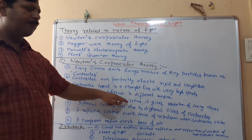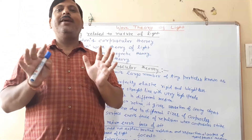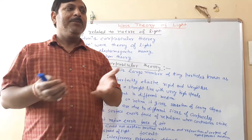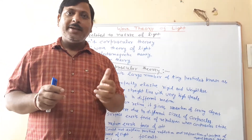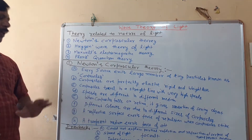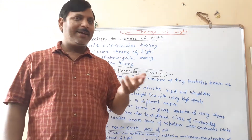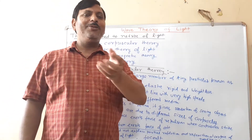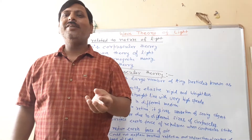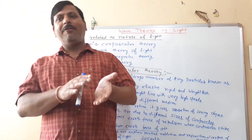The third point is that when the corpuscles fall on the retina, we get a sensation of seeing an object. Newton also explained different colors: different colors correspond to different sizes of particles — red, green, and blue colors result from different sized corpuscles.